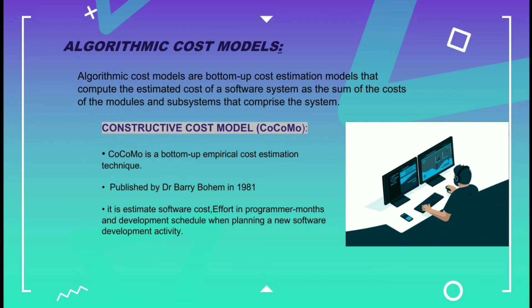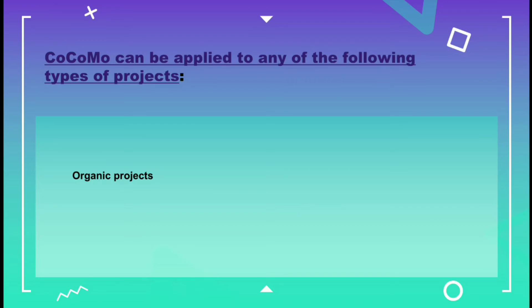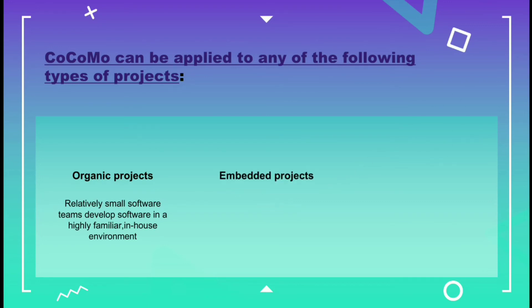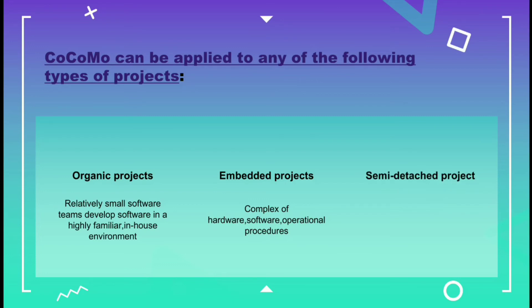The Constructive Cost Model, COCOMO, is a bottom-up empirical cost estimation technique published by Dr. Barry Boehm in 1981. It estimates software cost effort in programmer-months and development schedule when planning a new software development activity. COCOMO can be applied to organic projects, embedded projects, and semi-detached projects — which represent an intermediate stage between organic and embedded.